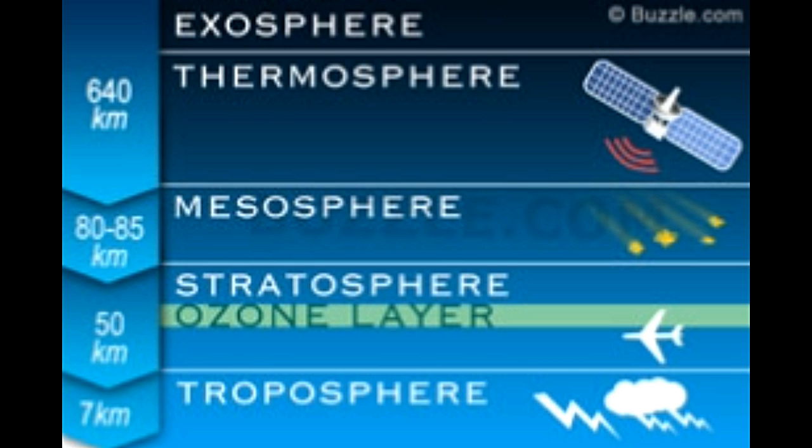The composition of each atmospheric layer influences its properties and leads to various atmospheric phenomena. Starting from the lowest, the five layers of the Earth's atmosphere are: troposphere, stratosphere, mesosphere, thermosphere, and ionosphere.